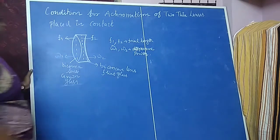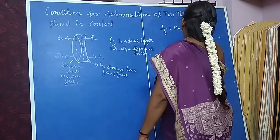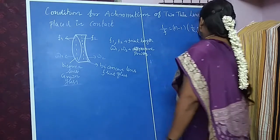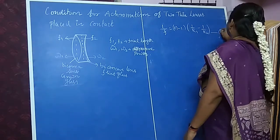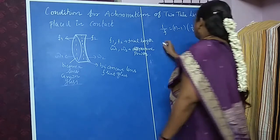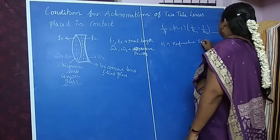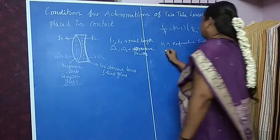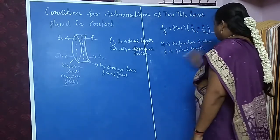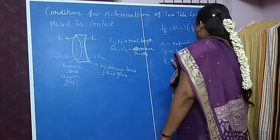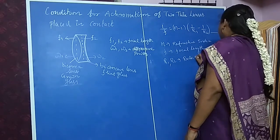We know that the focal length of a lens is given by: 1/F = (n - 1)(1/R1 - 1/R2). This is the focal length formula for a lens, where n is the refractive index, F is the focal length, and R1 and R2 are the radii of curvature of the lens.